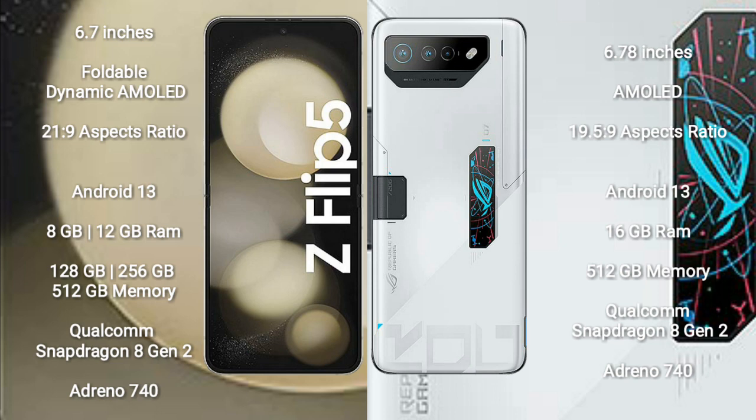Samsung Galaxy Z Flip 5 comes with 8GB or 12GB RAM and 128GB, 256GB, or 512GB internal storage, with a Qualcomm Snapdragon 8 Gen 2 processor and Adreno 740 GPU. Asus ROG Phone 7 Ultimate comes with 16GB RAM and 512GB internal storage, also with a Qualcomm Snapdragon 8 Gen 2 processor and Adreno 740 GPU.